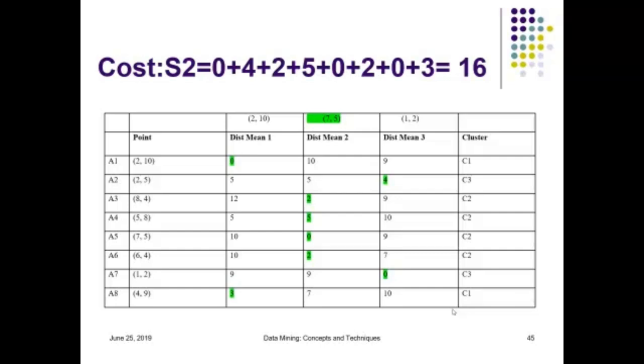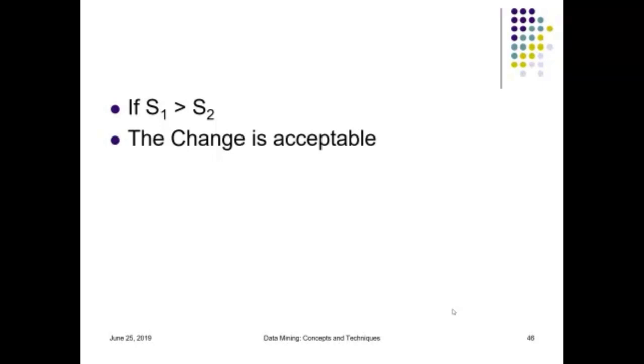Then again we consider the cost. We can see when we use the same cost function and determine the cost, the cost is less than the previous cost. So we have two costs S1 and S2. If S1 is greater than S2 then the change is acceptable, meaning the cost is less when we do a change.